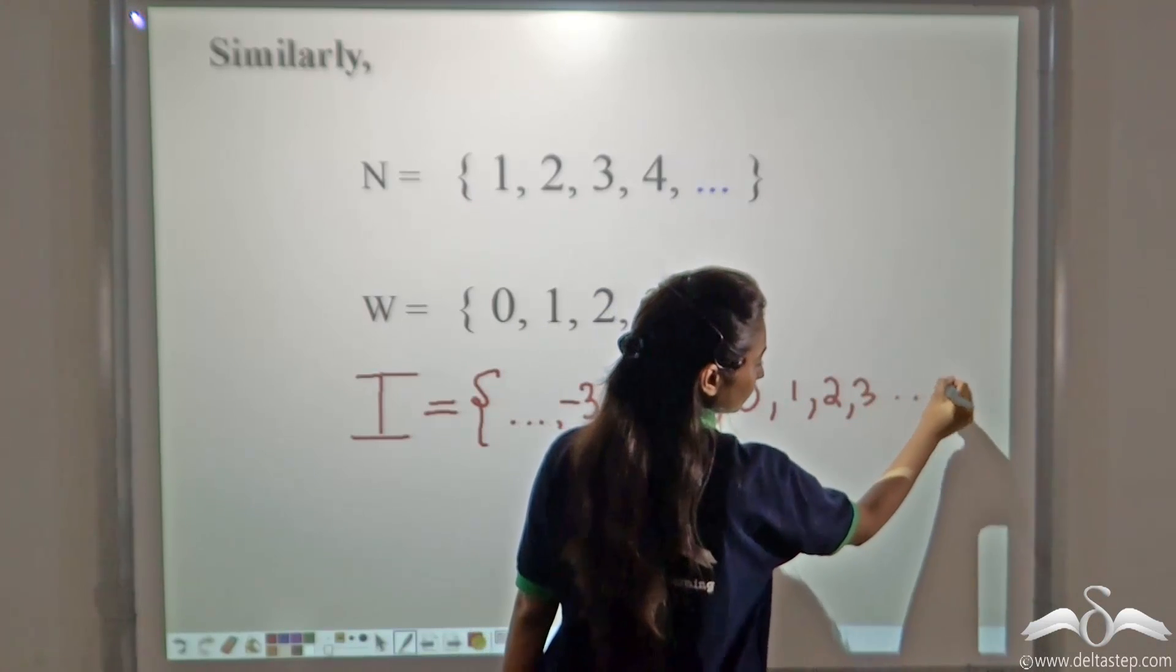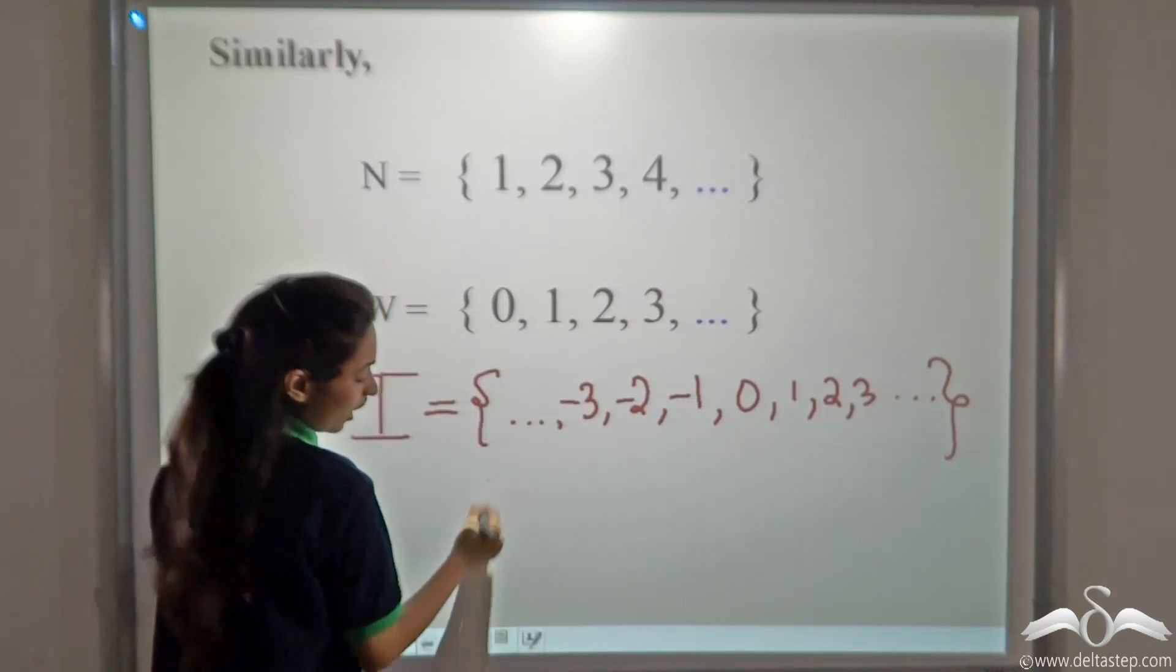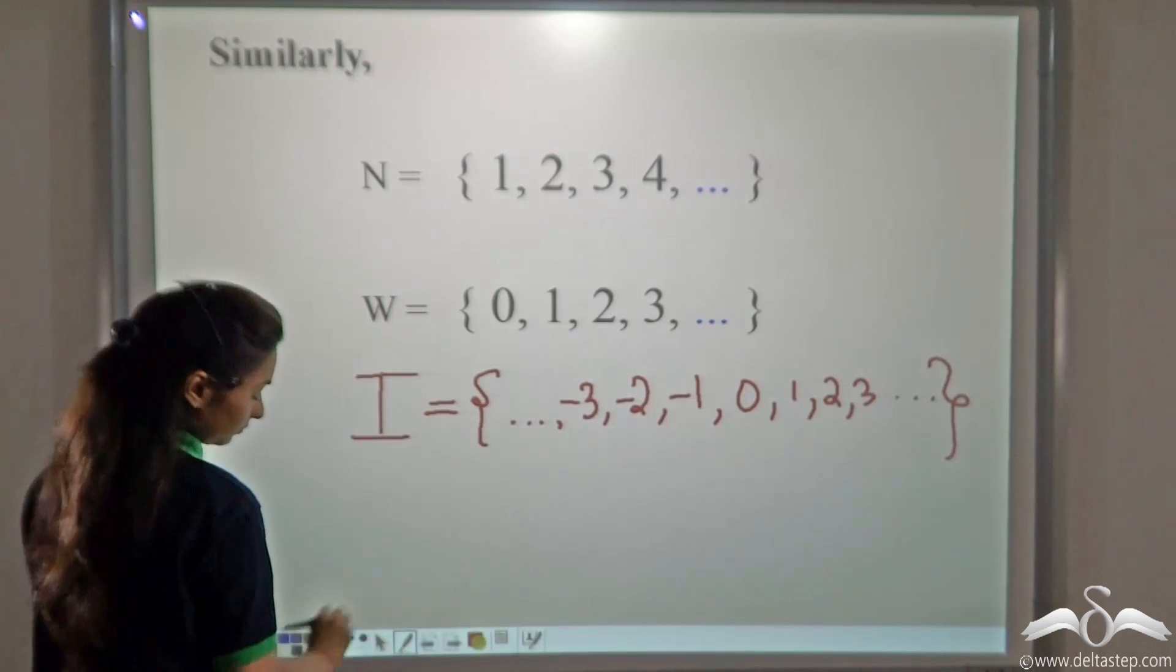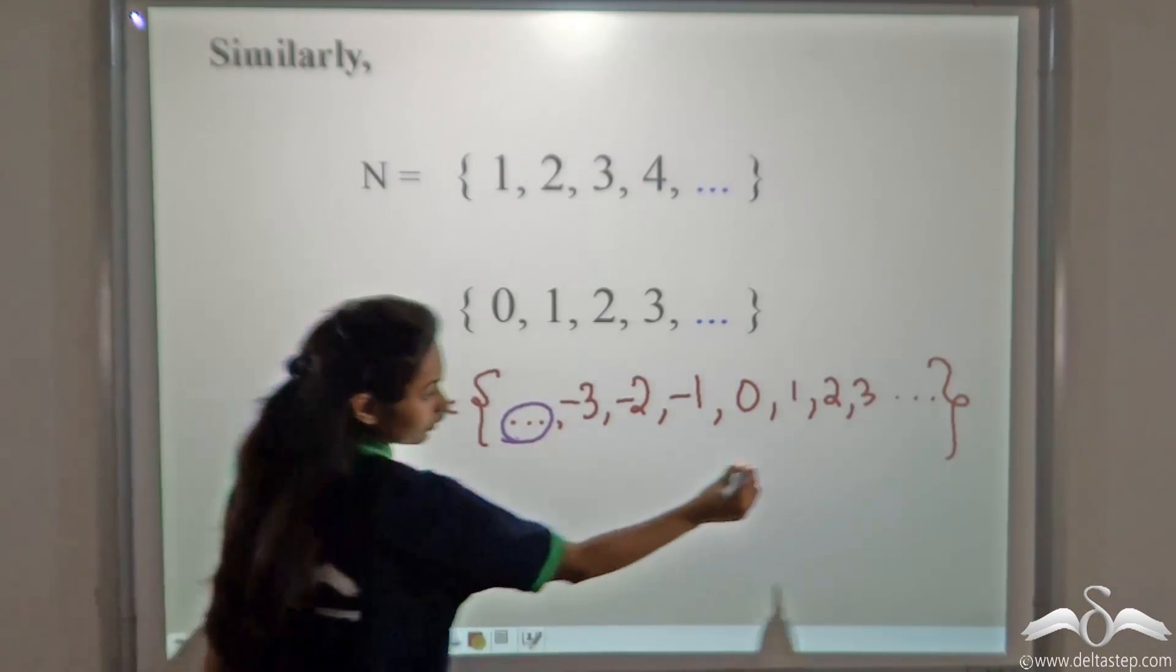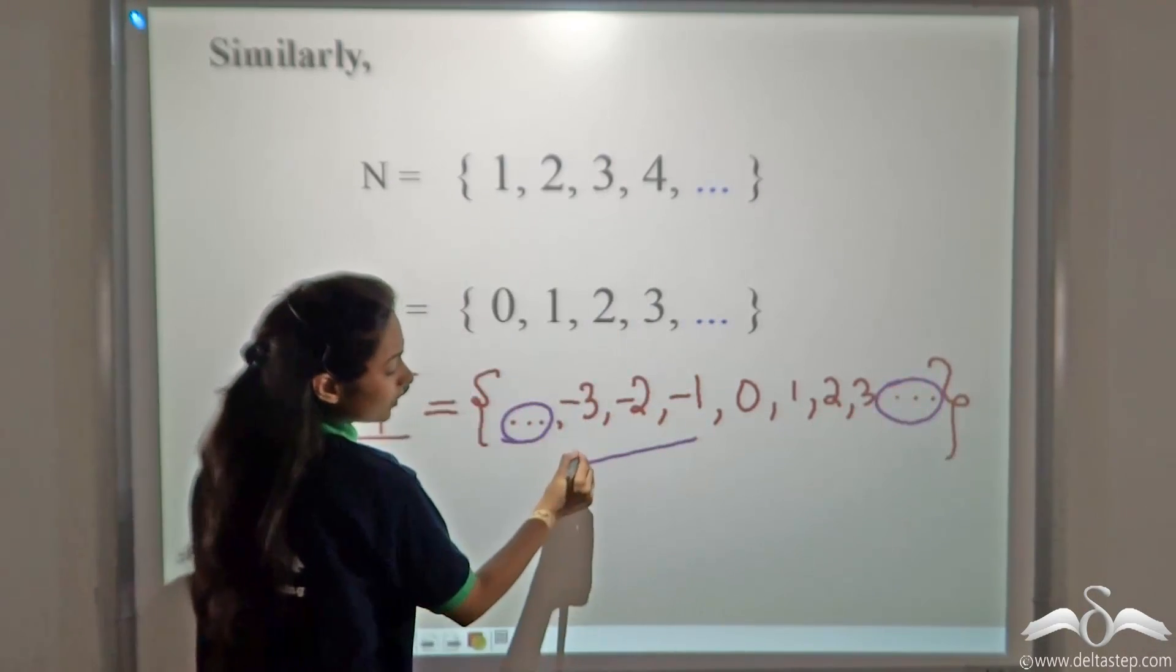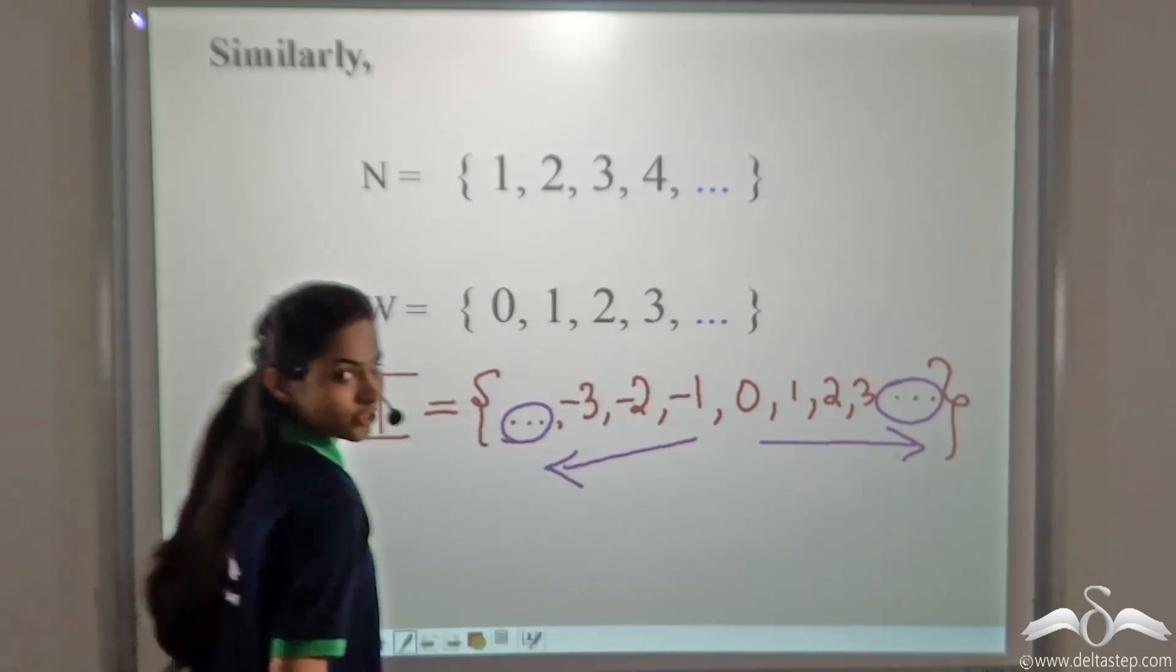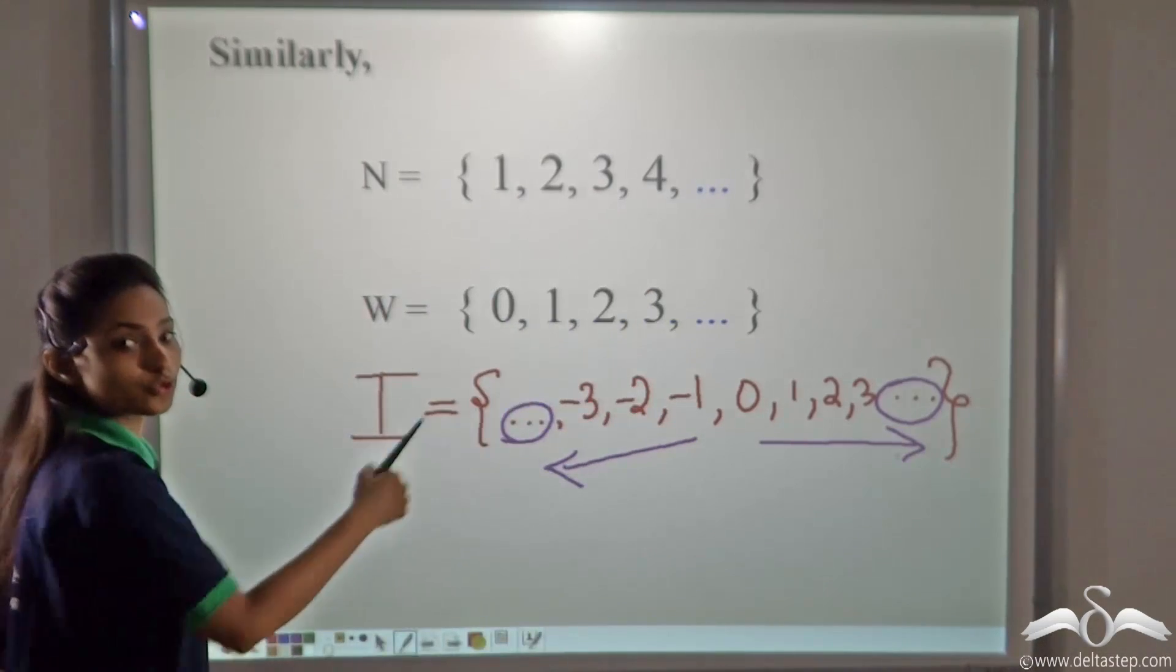Here, we can see we have used ellipses twice. Because, the elements go on in this direction as well as in this direction. So, ellipses is used twice here.